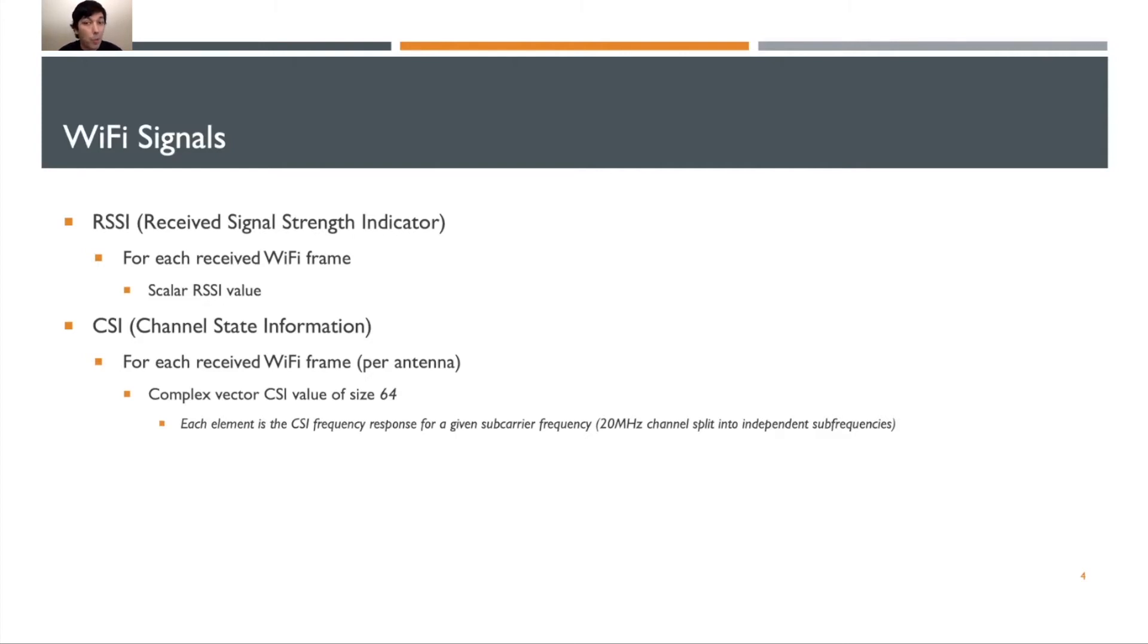On the other hand, a more popular metric lately is channel state information, CSI. For each received Wi-Fi frame, we receive a complex vector of size 64.